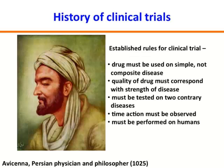I wanted to spend a moment on history. This is Avicenna, a Persian physician and philosopher who back in 1025 first described the rules for clinical trials. He said that a drug must be used on a simple, not a composite disease, so that you can really understand if the drug is treating the disease — not a complicated situation where there are many different factors at play.